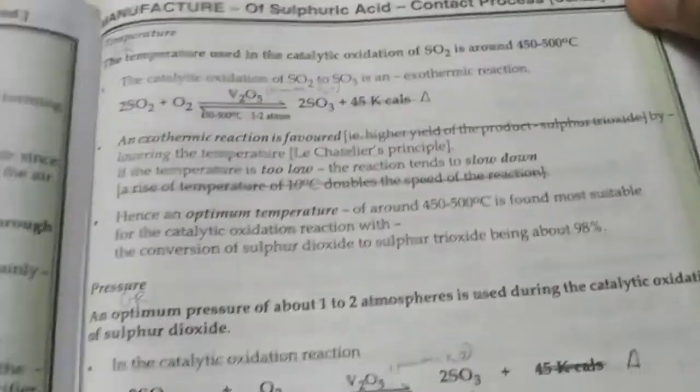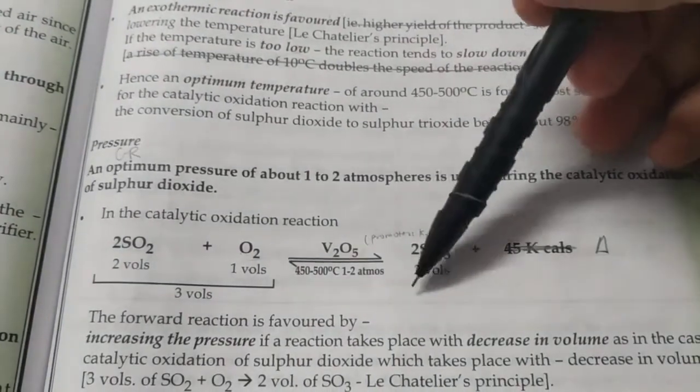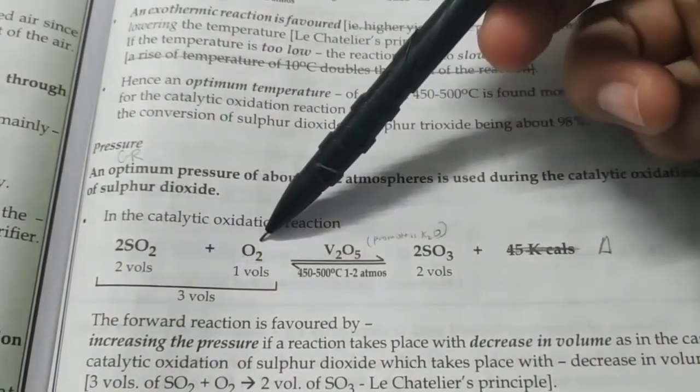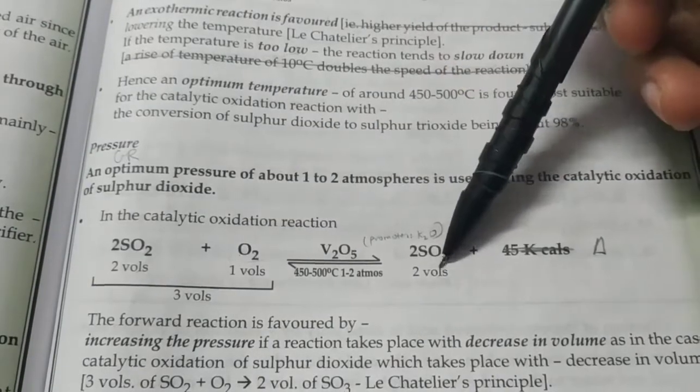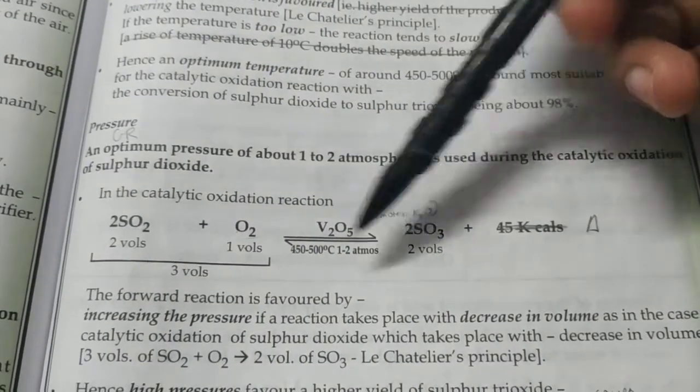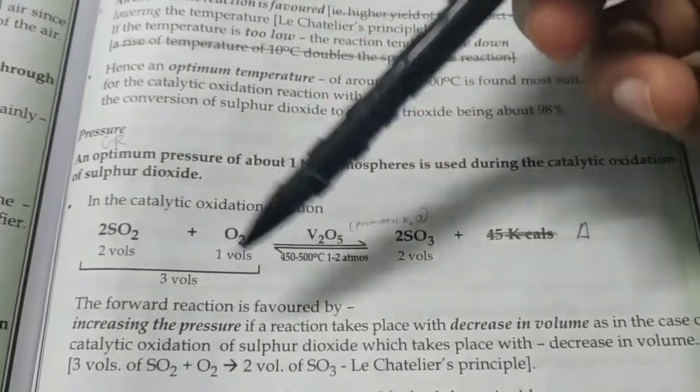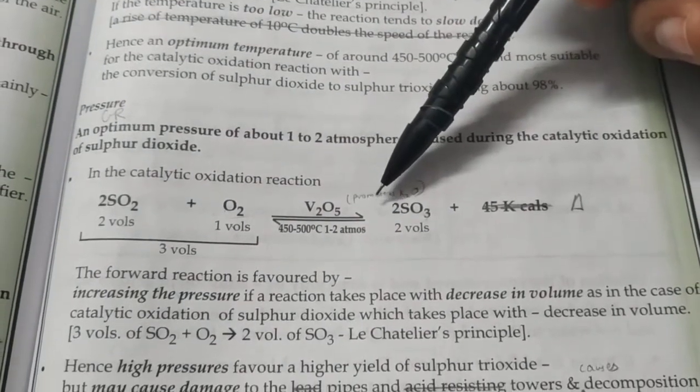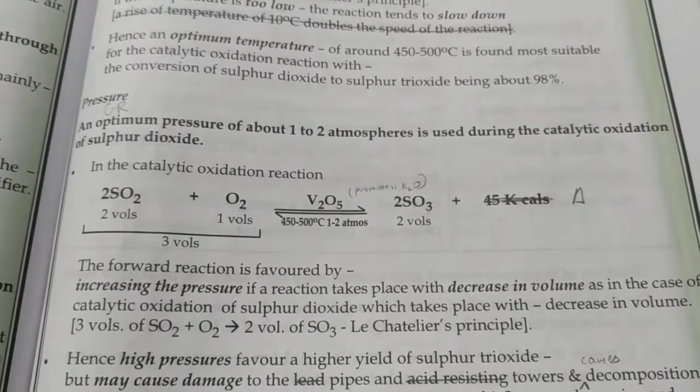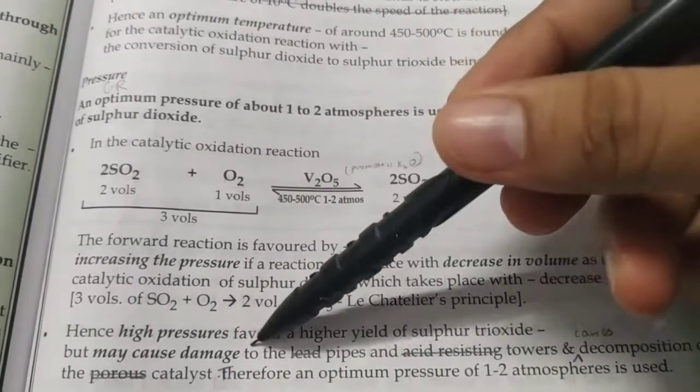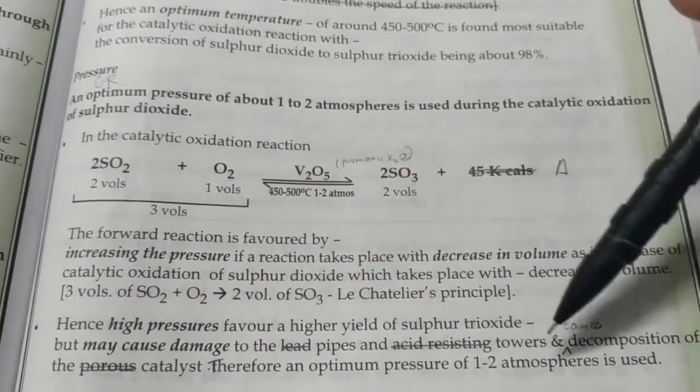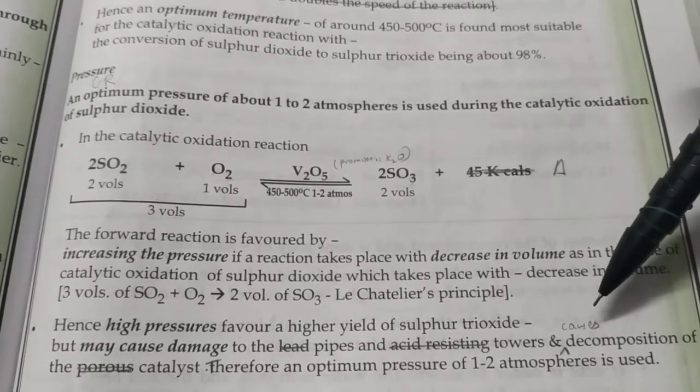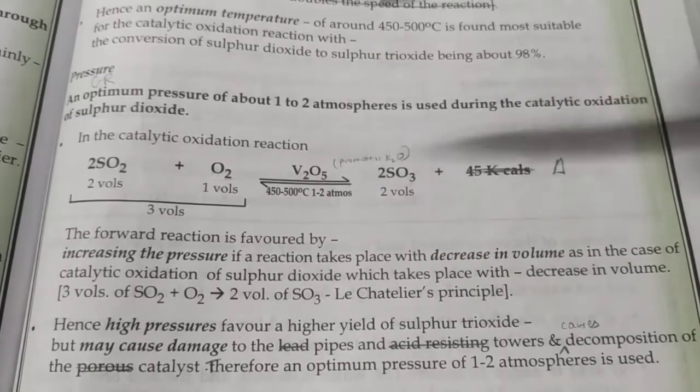What about the pressure? It's 1-2 atmospheres. Three volumes of gases react to give just two volumes, so there is a decrease in volume. A high pressure will facilitate the forward reaction, but very high pressure may cause damage to pipes and towers and may decompose the catalyst, so the optimum pressure is 1-2 atmospheres.